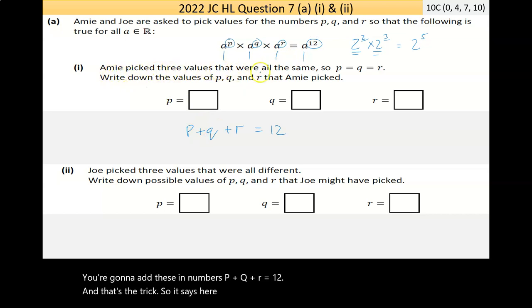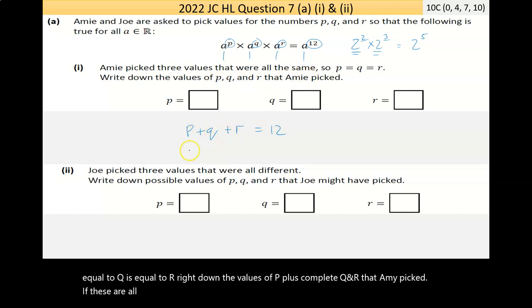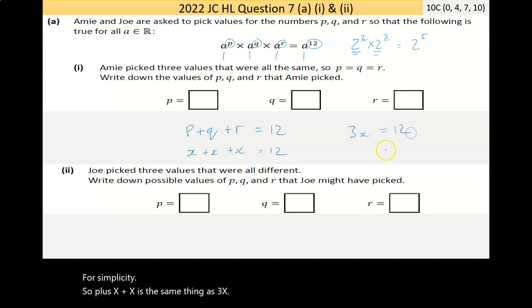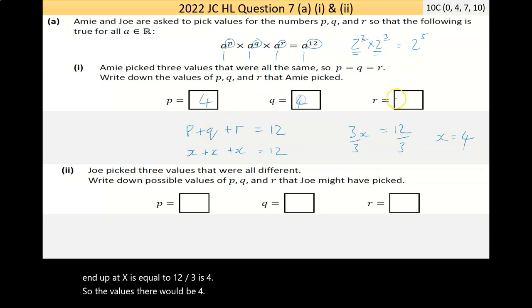So it says here, Amy picked three values that were all the same. So P is equal to Q is equal to R. Write down the values of P, Q, and R that Amy picked. Now if these are all the same number, we could represent them with the same variable. I'm just going to choose X for simplicity. So X plus X plus X is the same thing as 3X which equals 12. If I want to get X, I can divide this by 3 to cancel them. Do it to one side, got to do it to both. End up with X is equal to 12 divided by 3 is 4. So the values there would be 4, 4, and 4.